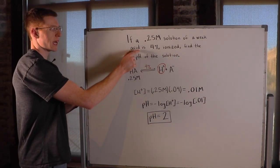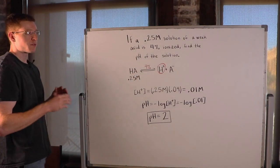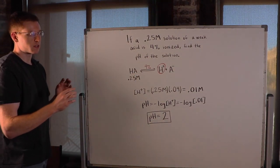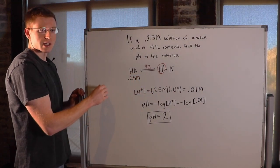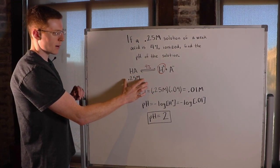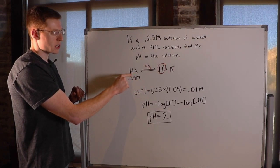If a 0.25 molar solution of a weak acid is 4% ionized, find the pH of the solution. So the first thing I did for this problem was I wrote out the general dissociation reaction of an acid. In this case, of course, it's a weak acid, but we represent acids in general as HA.